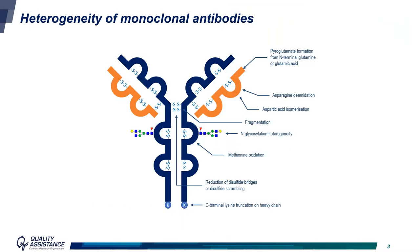Monoclonal antibodies, or mAbs, are heterogeneous molecules, mainly due to post-translational modifications. Some modifications can also be the result of degradation. Examples of post-translational modifications are the loss of the lysine on the C-terminal of the heavy chain, or N-glycosylation heterogeneity. Degradation leads, for instance, to methionine oxidation or asparagine deamidation. In some cases, stronger degradation could also lead to fragmentation of the antibody. The presence of these modifications affects the charge state of the antibody, and that is why these are qualified as charge variants — as variants of the main form.